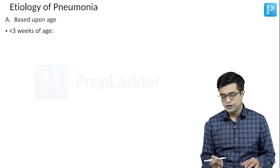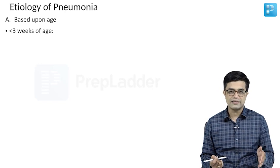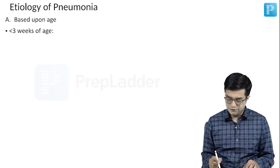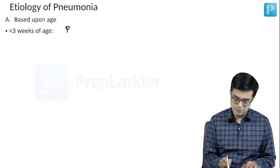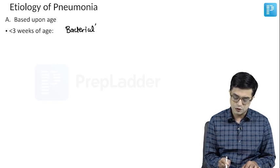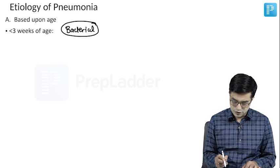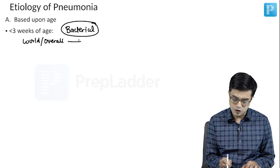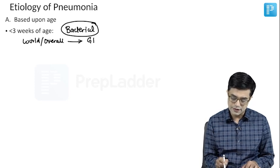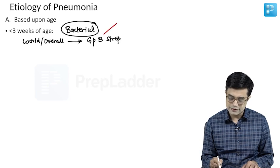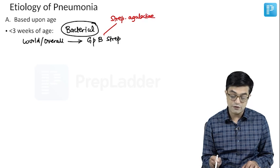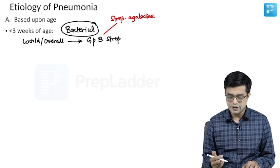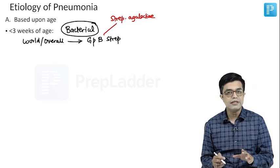First, if we talk about neonates — less than three weeks of age — we find that bacterial causes are the most common; it is overwhelmingly bacterial. In terms of the world overall, the most common cause of pneumonia in this age group is Group B Streptococcus, also called Streptococcus agalactiae. This is the most common cause worldwide, but it is not very frequent in India. If the question does not mention India, the answer will be Group B Streptococcus.